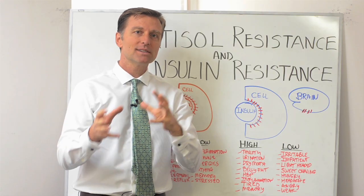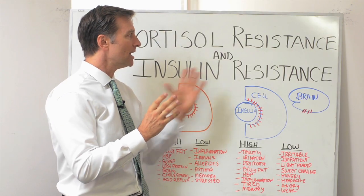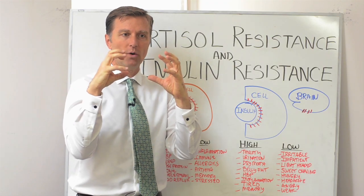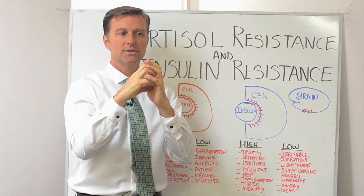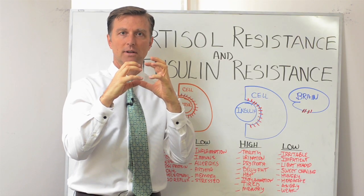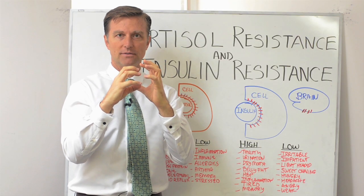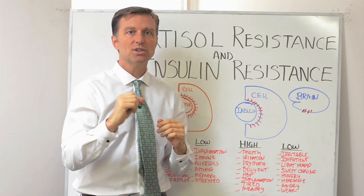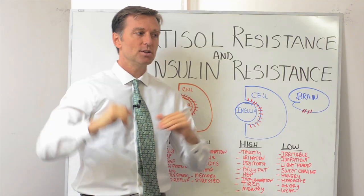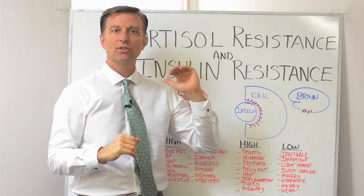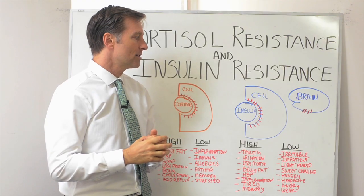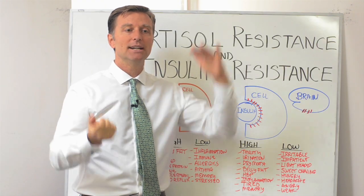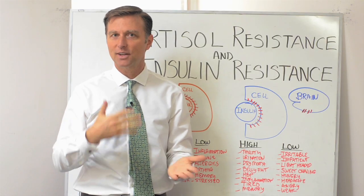They're both a little bit similar in symptoms. Anytime you have a resistance situation, you have a hormone that is not going into the cells properly. The receptor that's supposed to receive the hormone is resistive and blocking that hormone from going in. So you have a lot of hormone in the body but no effect — it's not creating the function of that hormone. You can have symptoms of too much and a deficiency at the same time, which is very confusing.